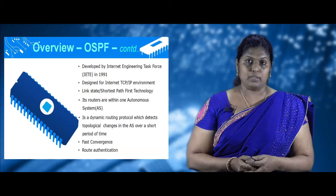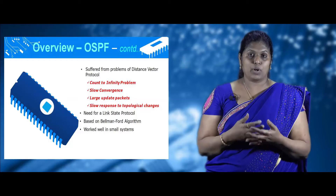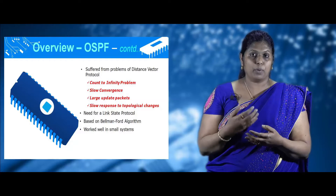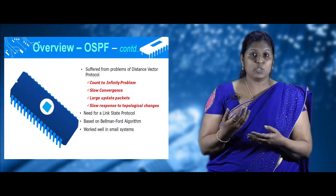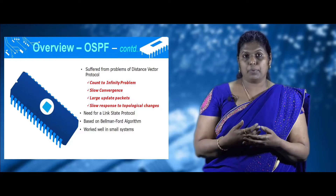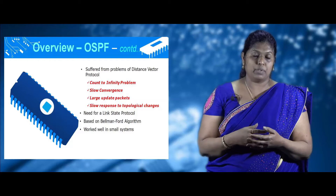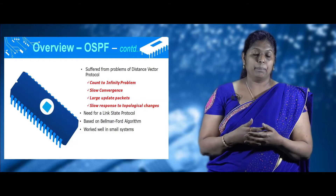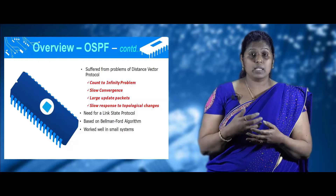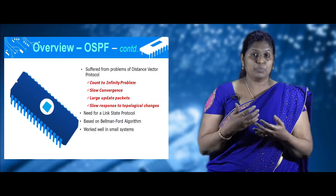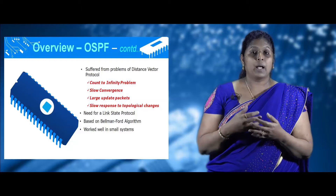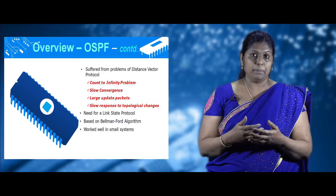Before going into the link state routing protocol, we need to know about the problems of the distance vector protocol that led to its proposal. The problems of the DV protocol are very slow convergence, the count-to-infinity problem, slow response to topological changes, and large data packet updates. Because of these problems, the link state routing protocol came into existence.